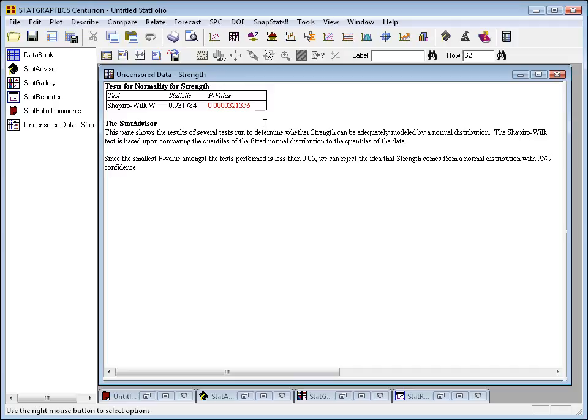And the way you interpret this test is you look at the p-value. If the p-value is small, let's say below 0.05, then at the 5% significance level, you can reject the idea that the data are a sample from a normal distribution.